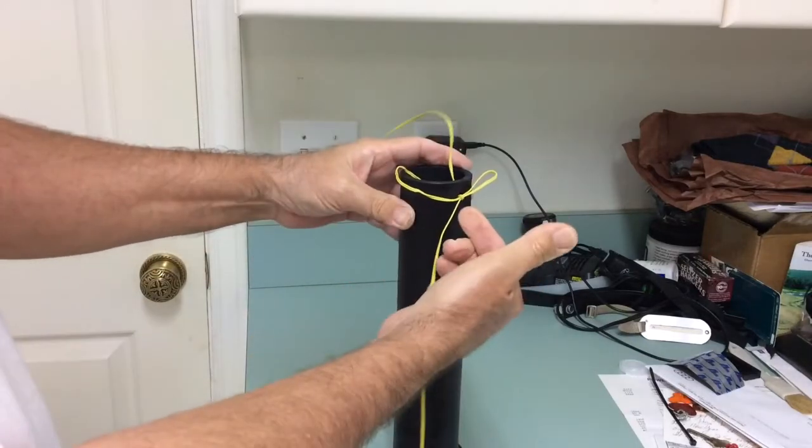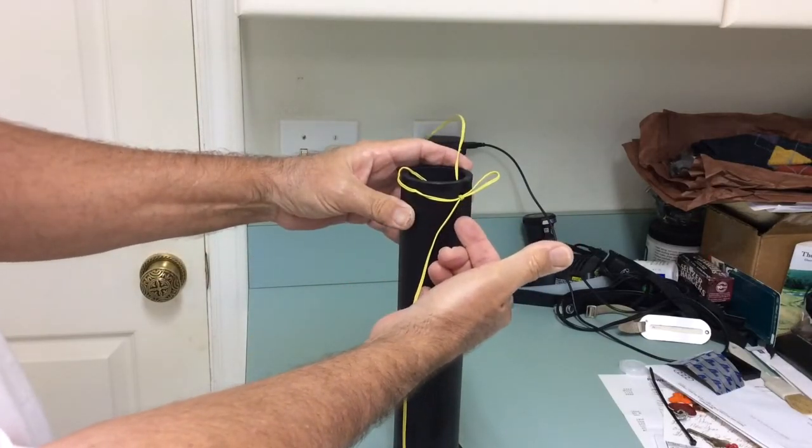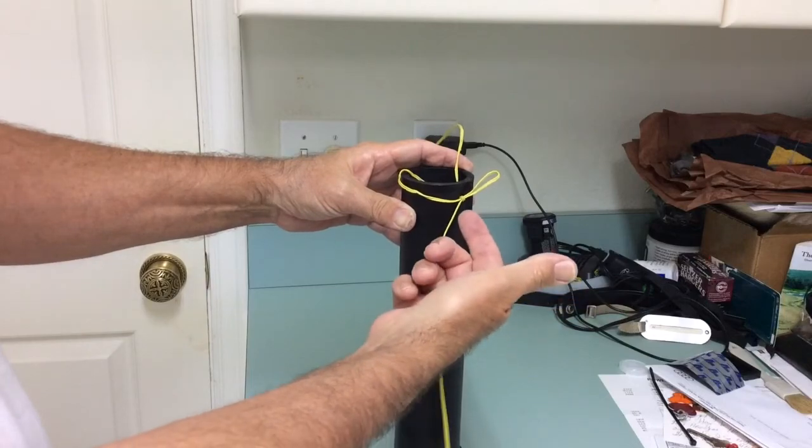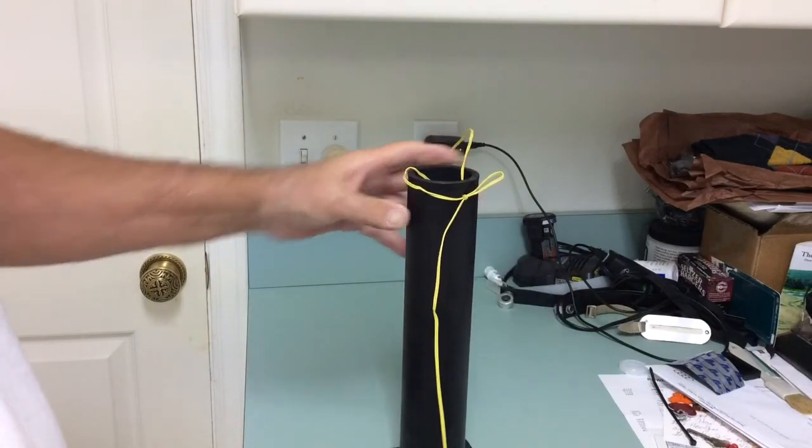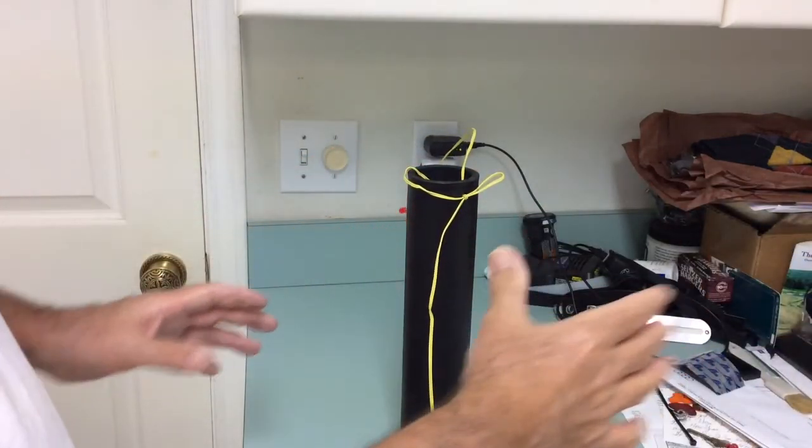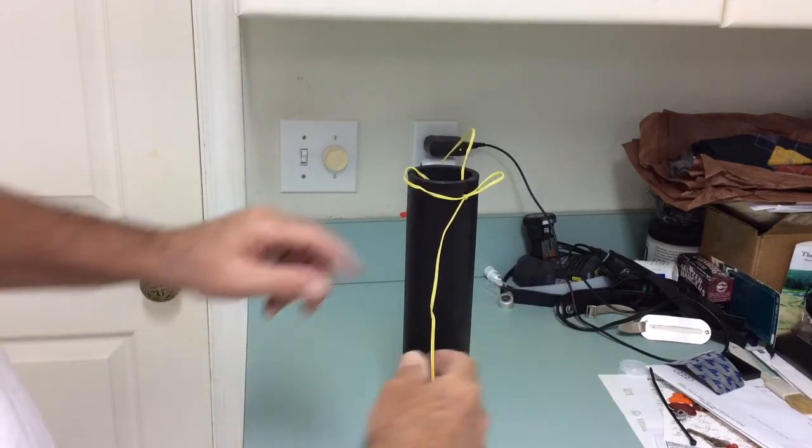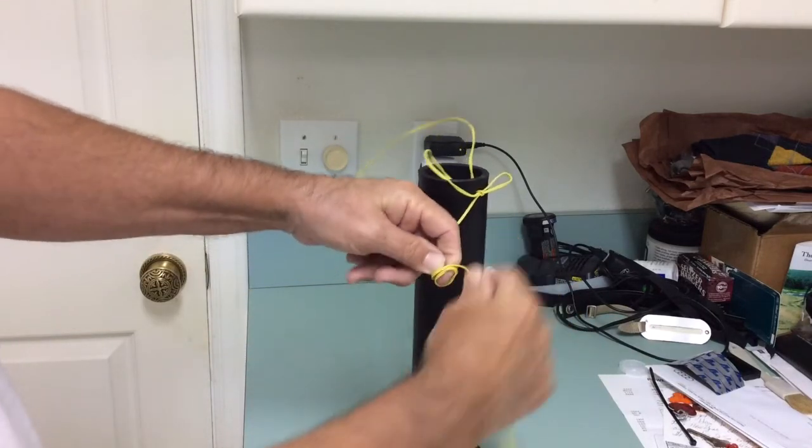So that's exactly how the pros do a loop in the field with commercial fireworks. You can do that with your consumer fireworks. Alternatively, if you've got your consumer fireworks in a rack, you can just put screws in your rack and wrap this around the screw and get the same effect.